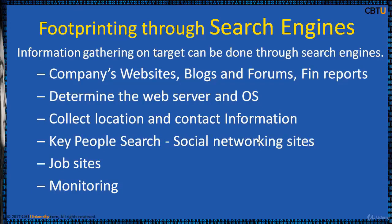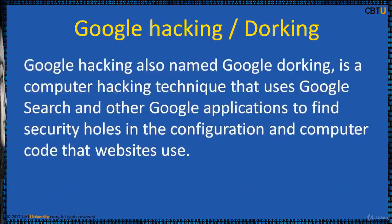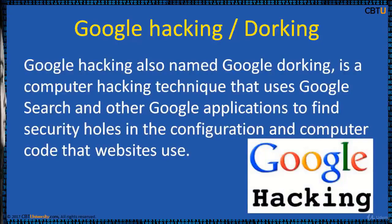We can also collect location and contact information with key people search, social networking sites, gather information from financial services, footprinting through job sites, and monitoring targets using alerts. Competitive intelligence includes gathering key intelligence info on the target company, its key people, financials, projects, customers, competitors, network protection technology being used, monitoring website traffic, and tracking online reputation.